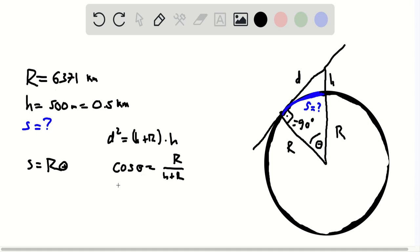We can invert this relation to find that theta is equal to the arc cos of r over h plus r.